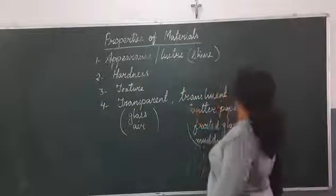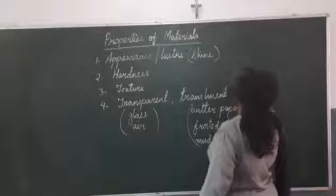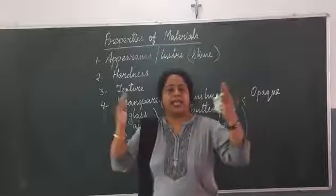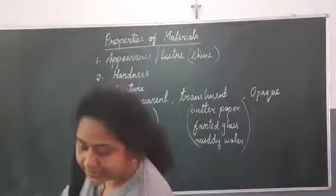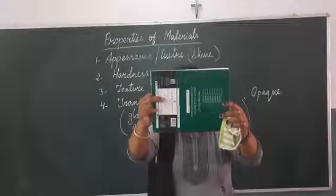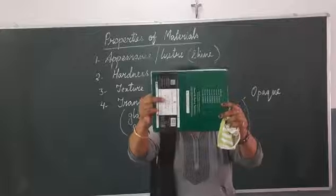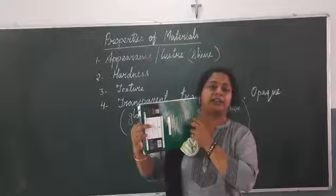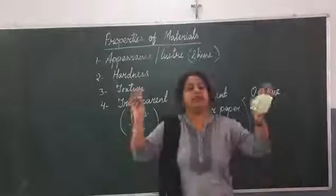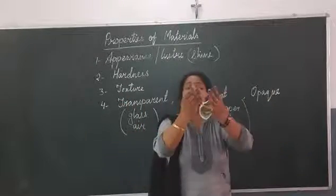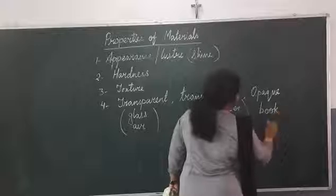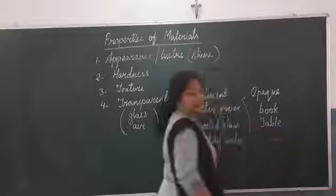The third category is opaque. Opaque objects are those through which you cannot see anything. For example, this book — if I keep this book in front of my face, you are not able to see my face because this book is opaque. Other examples include a table and a big stone, which are also opaque. So opaque means the object through which you cannot see anything.